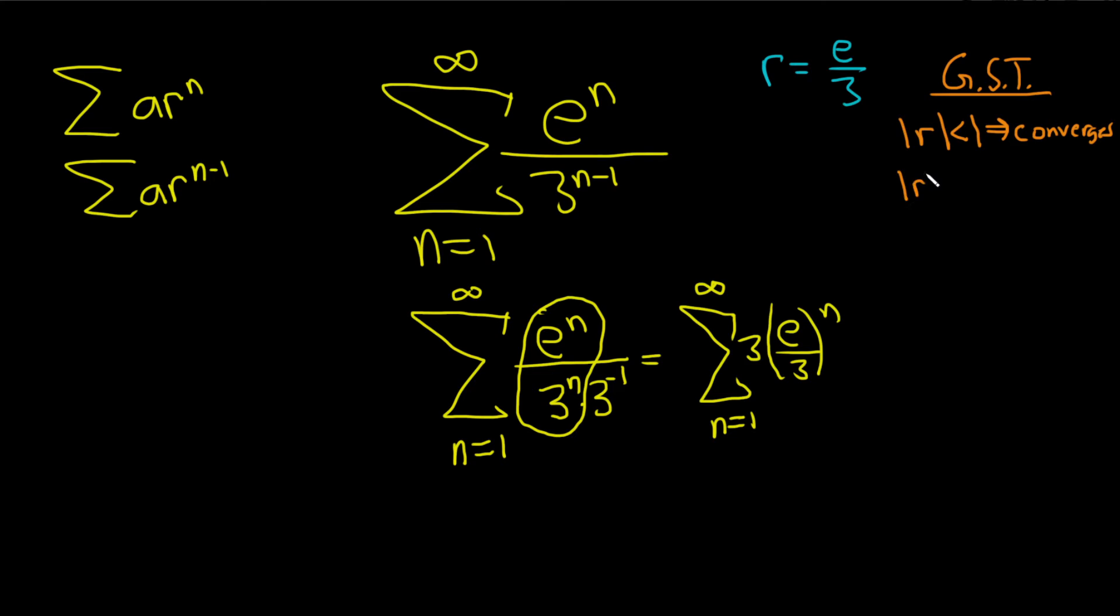If the absolute value of r is greater than or equal to 1, then our test tells us it diverges. Here r equals e over 3, so if we take the absolute value of r we're basically taking the absolute value of e over 3, which is just e over 3.